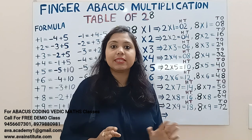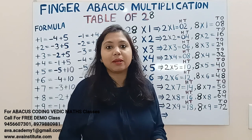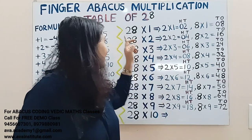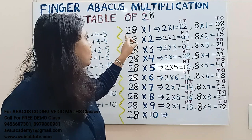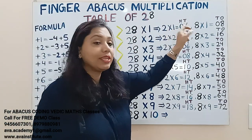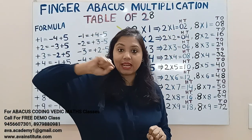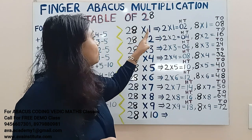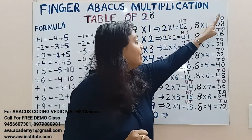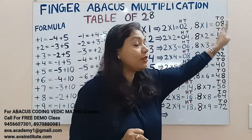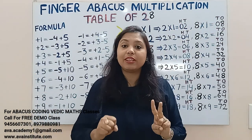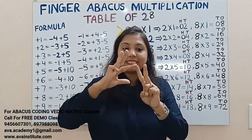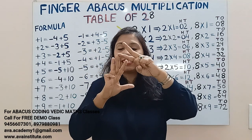Now let's quickly start. 28 ones: 2 ones are 2 — in hundreds: 0, in tens: 2. Now 8 ones are 8 — in tens: 0, in ones: 8. So what will be the answer? 10, 20, 21, 22, 23, 24, 25, 26, 27, 28. 28 is the answer.